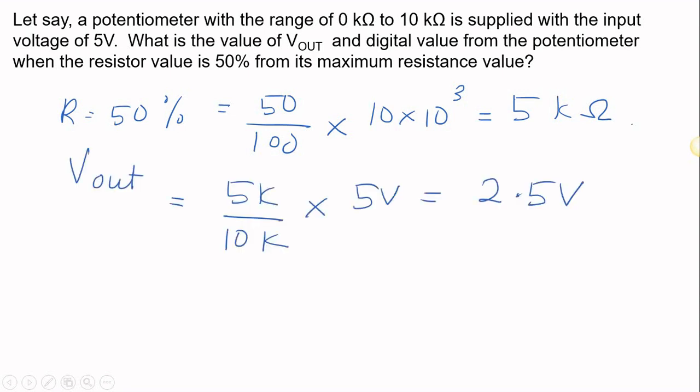So the Vout is 5 kΩ divided by 10 kΩ, and then you times with the input voltage of this ADC, and then you will get 2.5V.